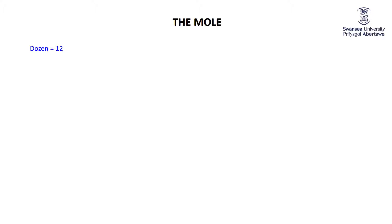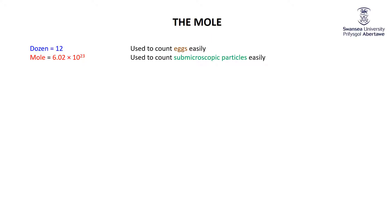We use a dozen for 12 as an easy way to count eggs. Instead of going into a grocery store with a big basket full of eggs and counting one, two, three... they're collected in chunks of dozens or half dozens, because it's just something used to count eggs easily. Well, a mole is exactly the same idea — it is used to count the number of sub-microscopic particles easily.